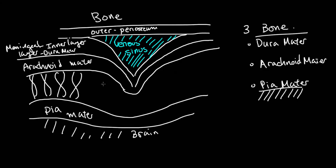And in between the arachnoid mater and the pia mater is this very important space called the subarachnoid space, where there are two main things that are living in the subarachnoid space.